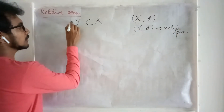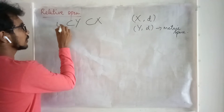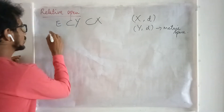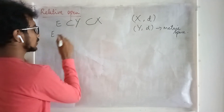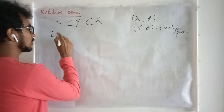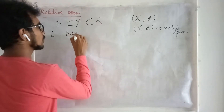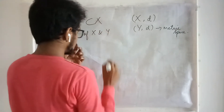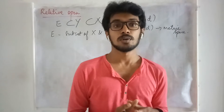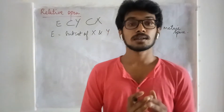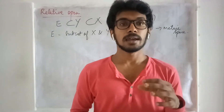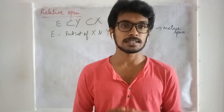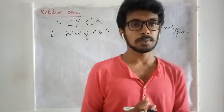Now consider a subset E. This E may be treated as a subset of X as well as a subset of Y. Now, what is the definition of an open set? Every point of a set is an interior point of that set. That is the definition of an open set.